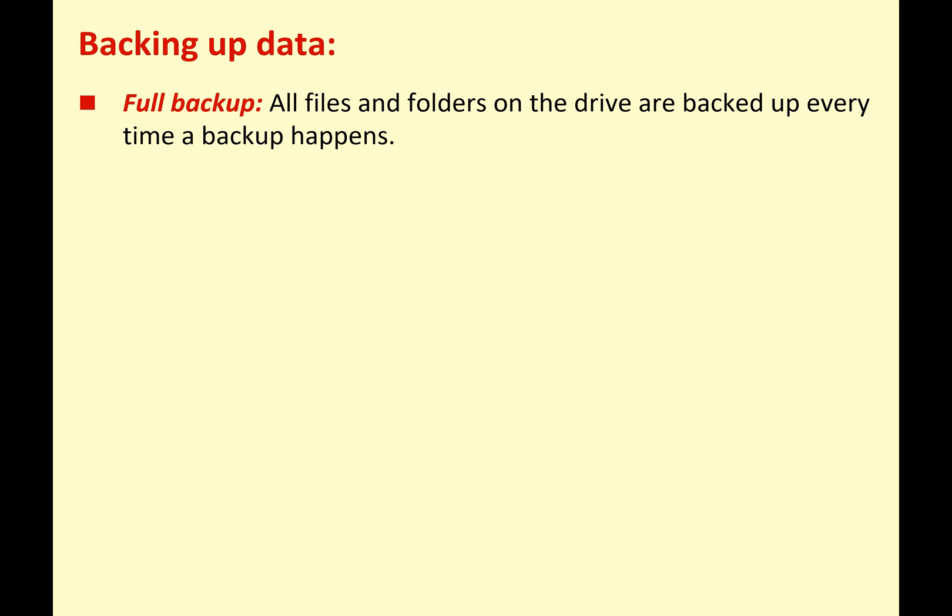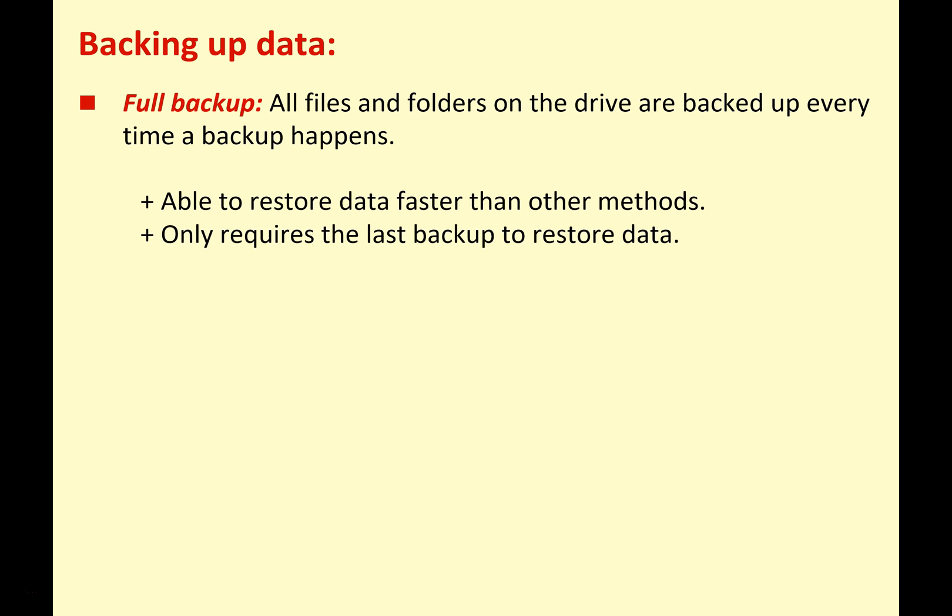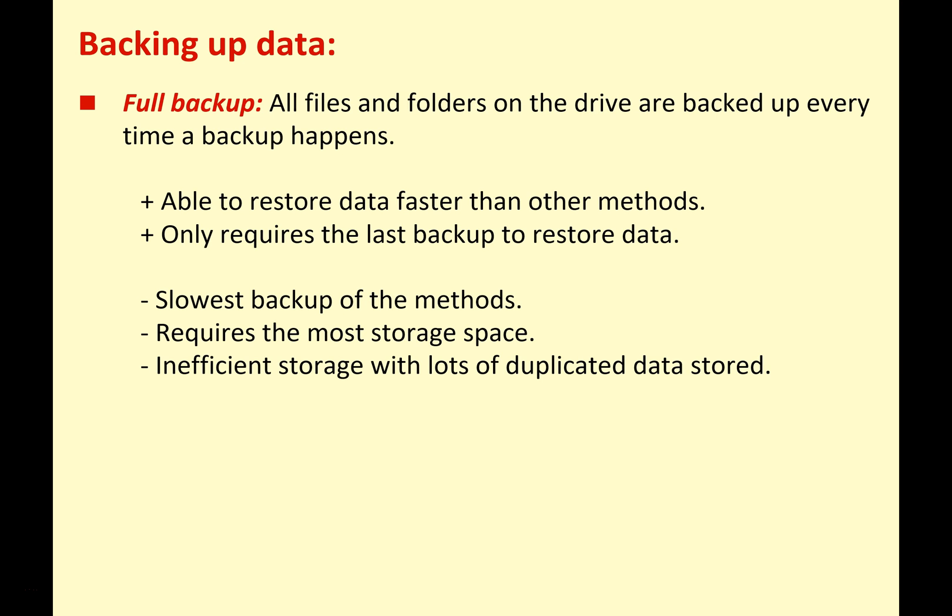Full backup means all files and folders on the drive are backed up every time. The positives are that you can restore data faster than other methods and only require the last backup to restore. However, it's the slowest backup method because you're backing up every file and folder, it requires the most storage space, and it's very inefficient — each backup duplicates most of the same files and data since your hard drive doesn't completely change every few weeks.